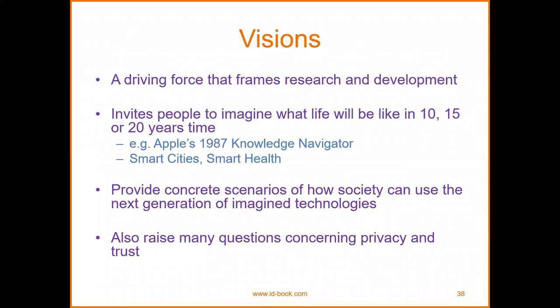For example, Apple's 1987 Knowledge Navigator, smart cities, and smart health provide concrete scenarios on how society can use the next generation of imagined technologies. They also raise many questions concerning privacy and trust — which is why we have the Data Privacy Act of 2012, because the majority of our data and information is already on the web.